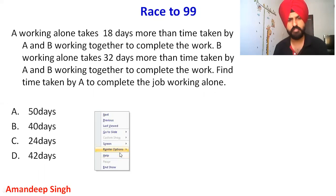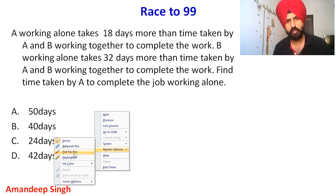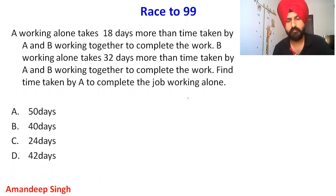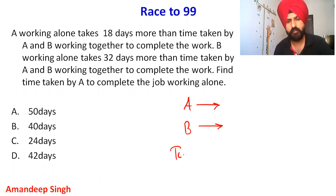It's a very easy question — a very basic variety — and a shortcut is involved here. In the question, it is given that two people are A and B, and we are told how many days each takes when working alone compared to when they are working together. This information is given.